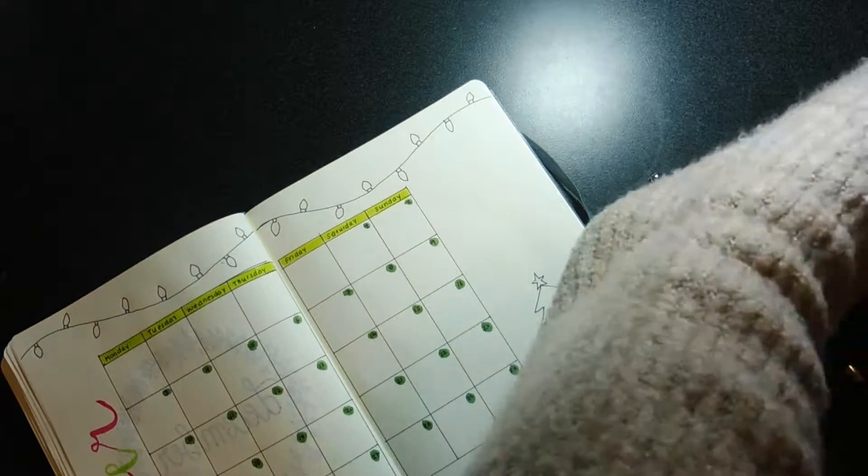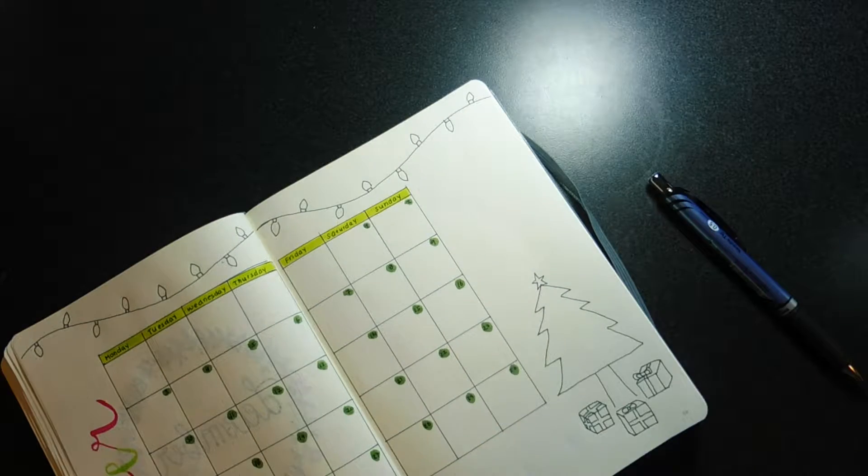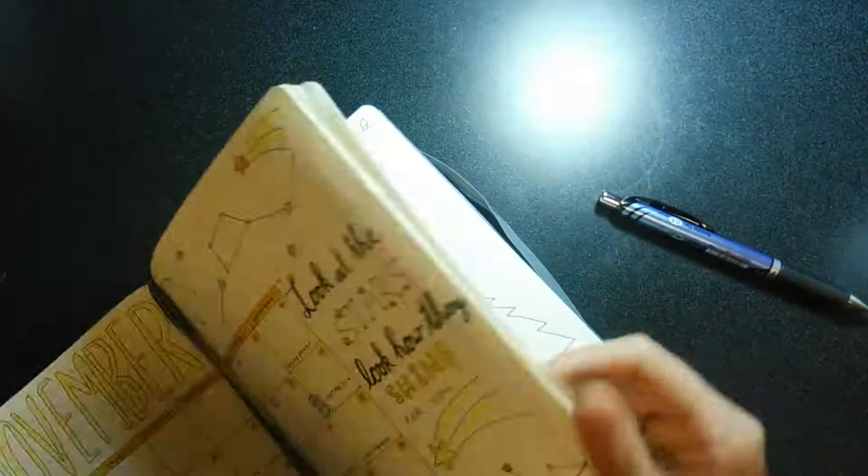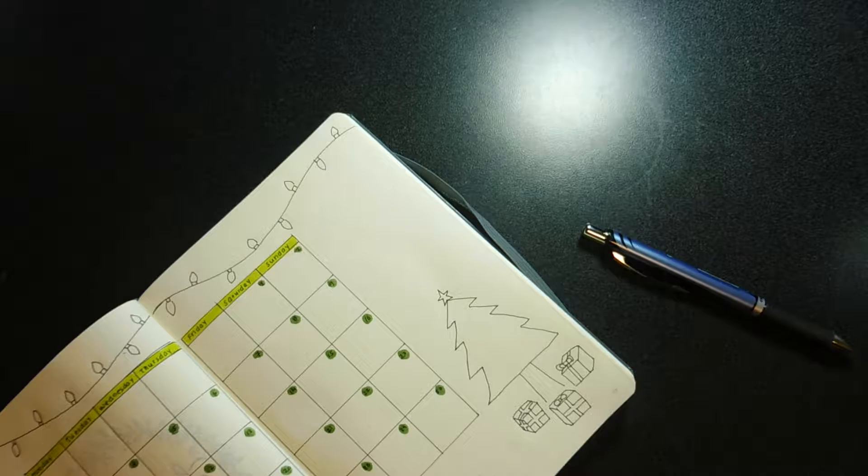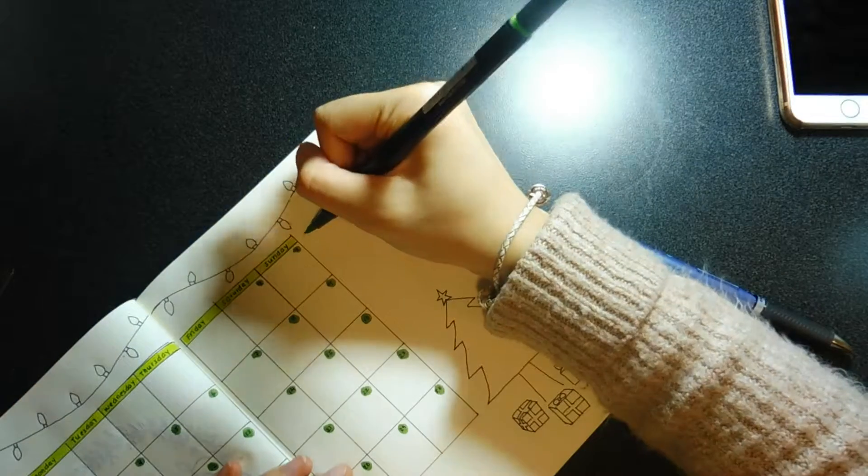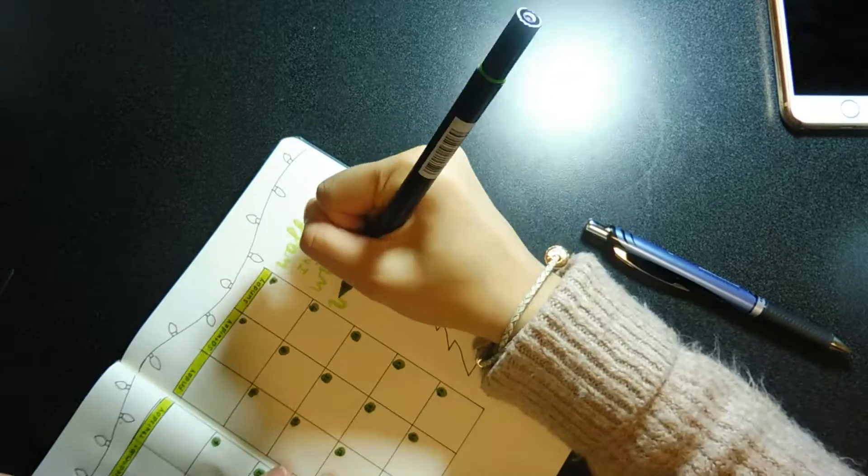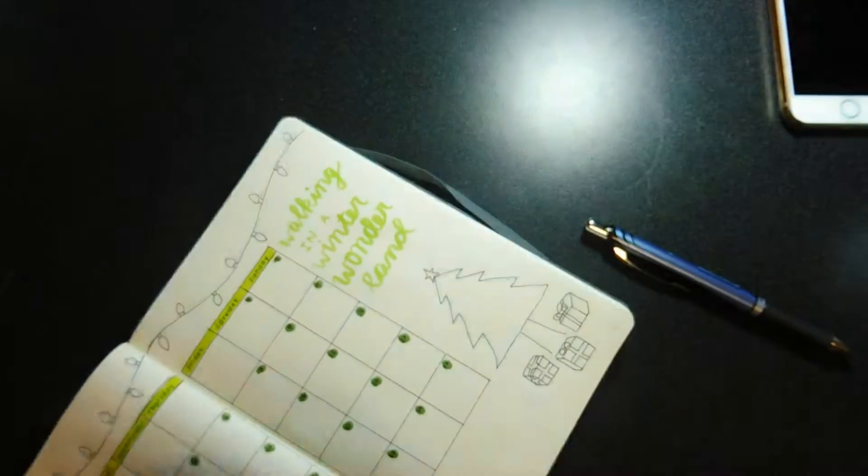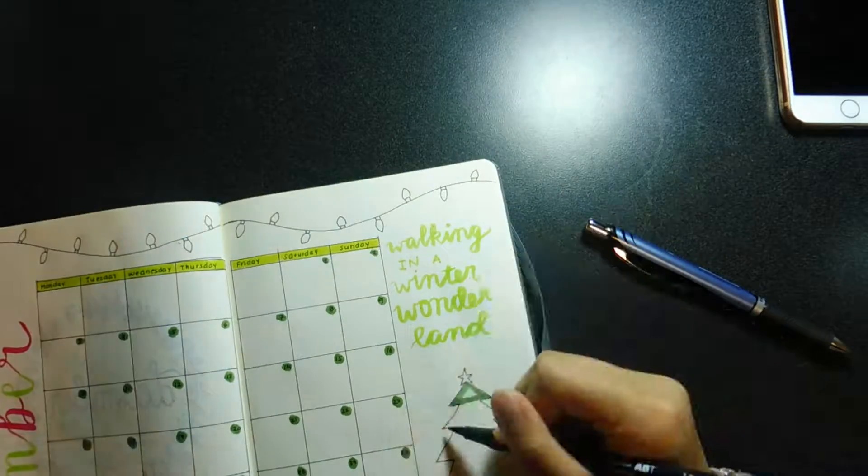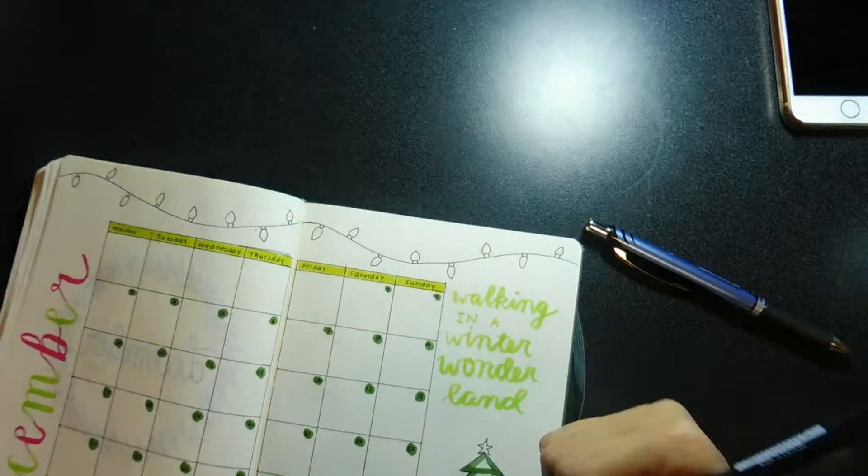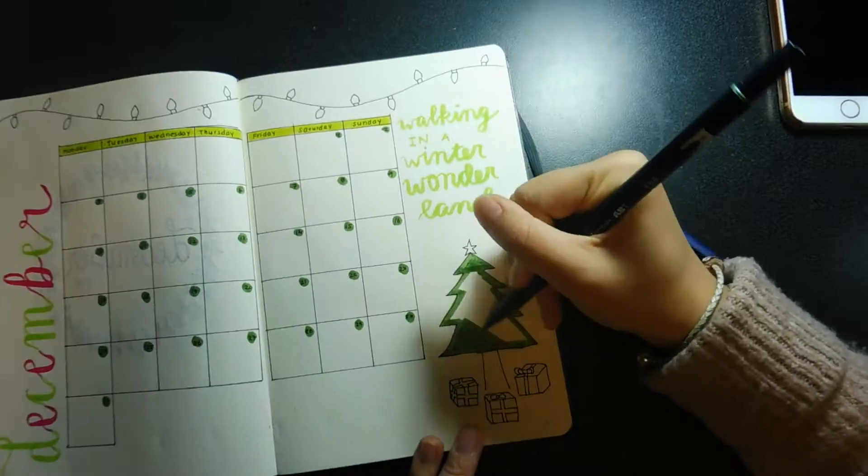Along the top of the monthly calendar where there's a bit of space, I did some rainbow string lights to kind of get into the holiday mood and also add a bit more color other than red and green. Then afterwards I lettered in "walking in a winter wonderland" on the side. It's not my best calligraphy work, but I'm still practicing. Then afterwards I used my Tombow dual brush pens to color in everything.